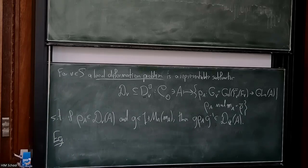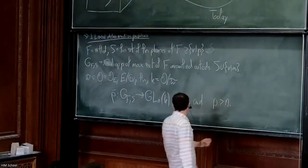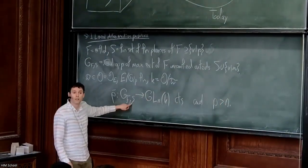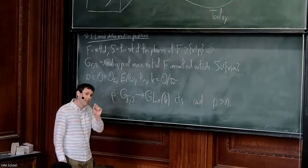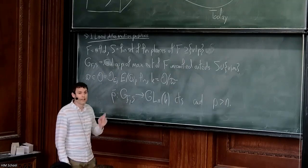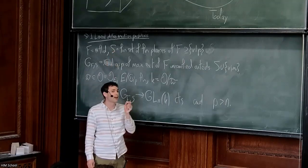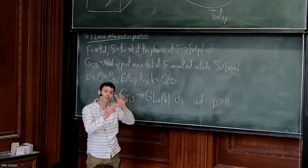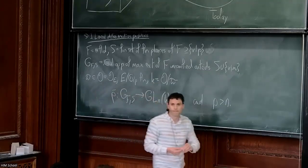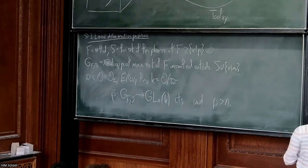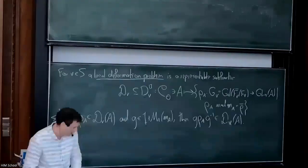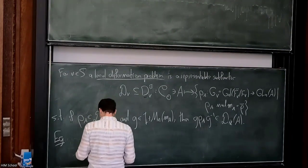This is going to be a global thing. Remember last time, R is some sort of deformation ring for row-bar satisfying some conditions. R_Q is just going to be where I allow some ramification at some other primes — I'm going to enlarge the set S to some S union Q. I keep whatever conditions I had at S, but allow it to be anything I want at Q. The point is we're going to choose the primes in this set Q very carefully. This is exactly what came up in James's talk: on the automorphic side you had to choose these primes carefully to change the level of these complexes.